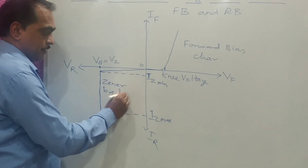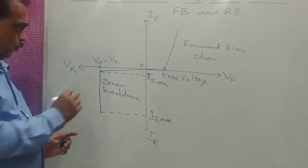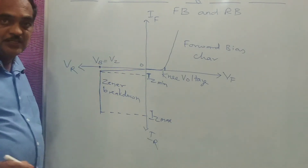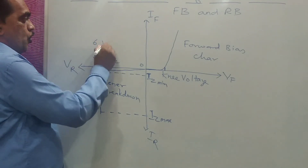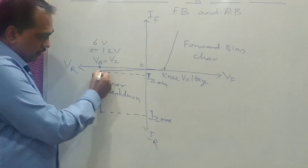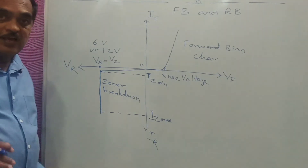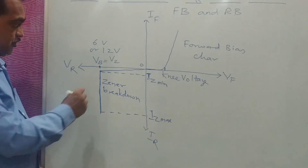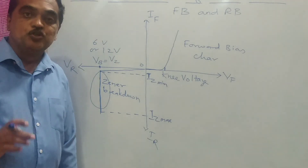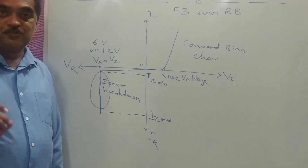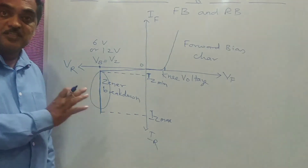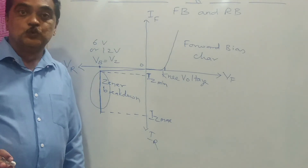As you increase the reverse bias voltage applied to the Zener diode, if it reaches a certain specific voltage — that is the breakdown voltage or Zener voltage, which can be 6 volts or 12 volts depending on which diode you use — the current is going to increase and the voltage is limited to a constant value. This feature, which is called Zener breakdown, is very important for the Zener diode to be used as a voltage regulator. This type of specific characteristic you don't find in an ordinary PN junction diode — it is found only in Zener diode, and therefore Zener diode is mostly used in reverse bias condition.